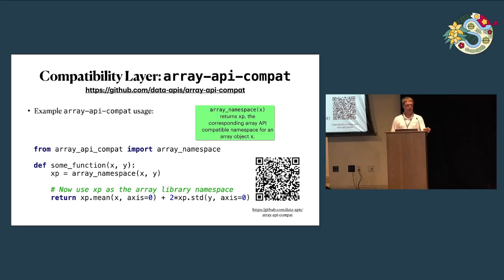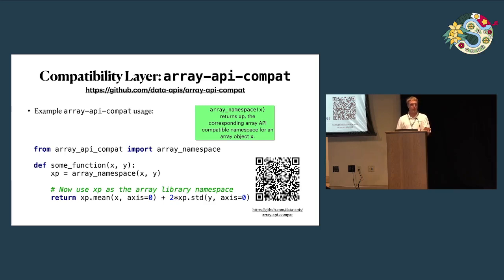The only entry point is the array_namespace function I talked about earlier — you just pop this at the top of your function and pass in its inputs. This will give you whatever array library corresponds to those inputs. So if x and y are NumPy arrays, then XP will be a NumPy array namespace that's compliant with the array API. And if they're PyTorch tensors, it'll give you the PyTorch namespace.